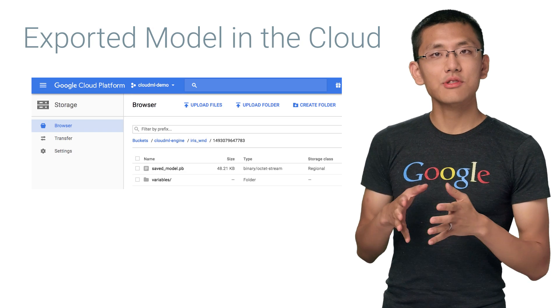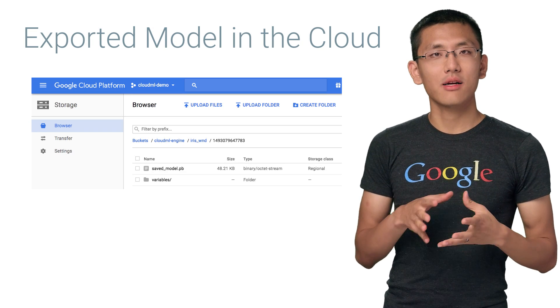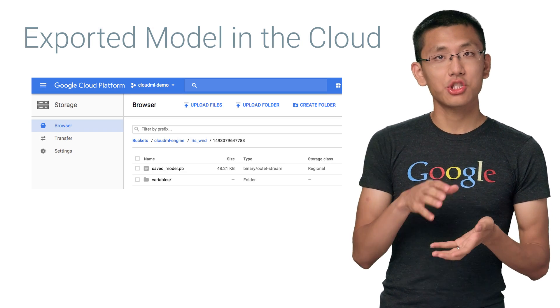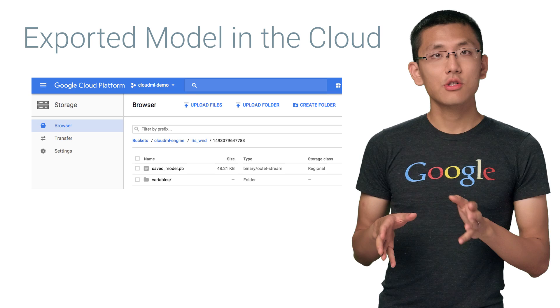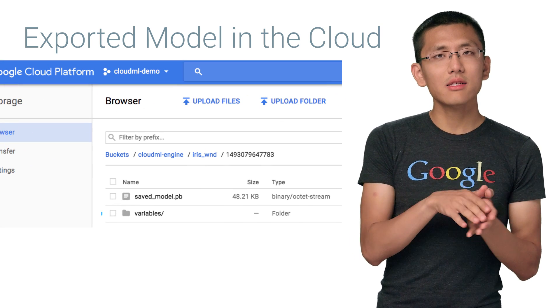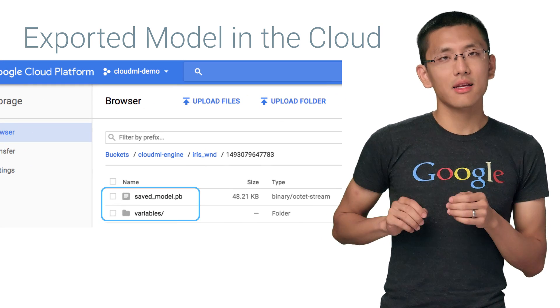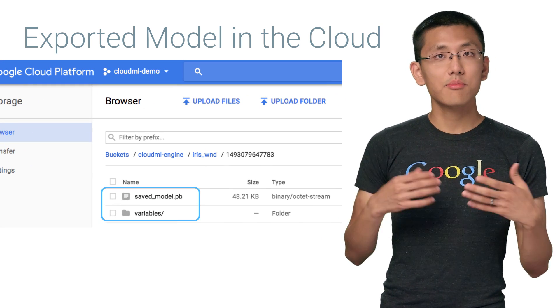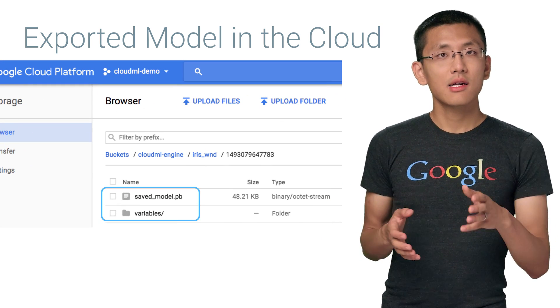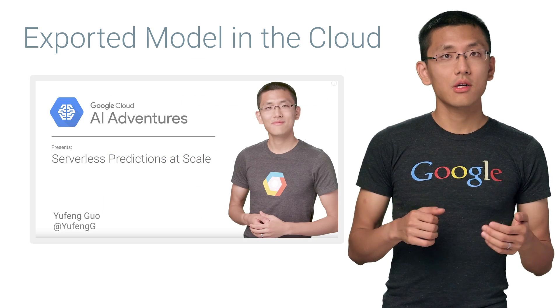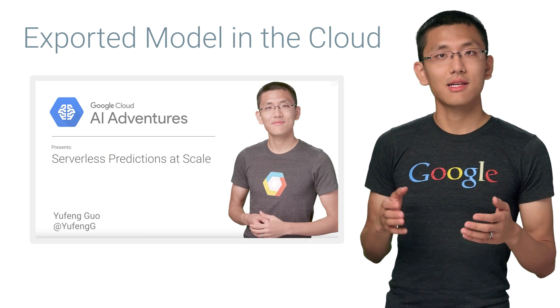Our code exports the trained model to our cloud storage path that we have provided in the job directory. From here, we can easily point the prediction service directly at the outputs and create a prediction service, as we learned about in episode four, Serverless Predictions at Scale.